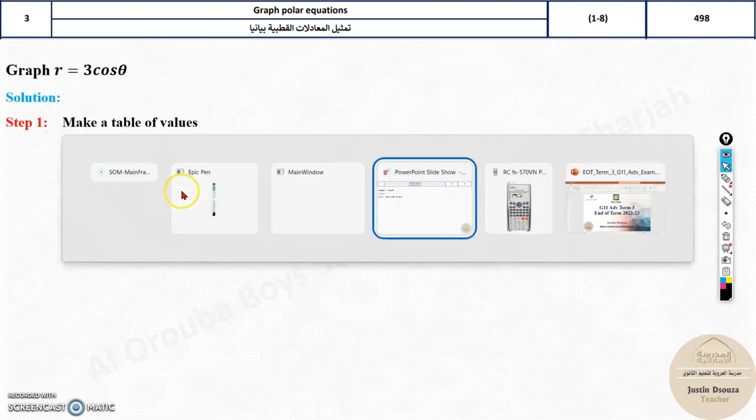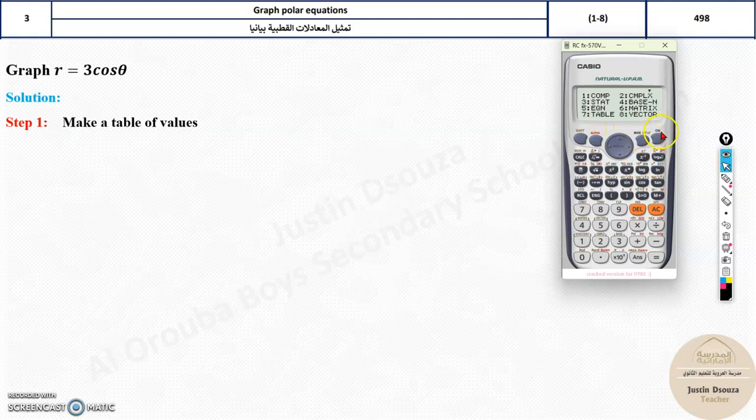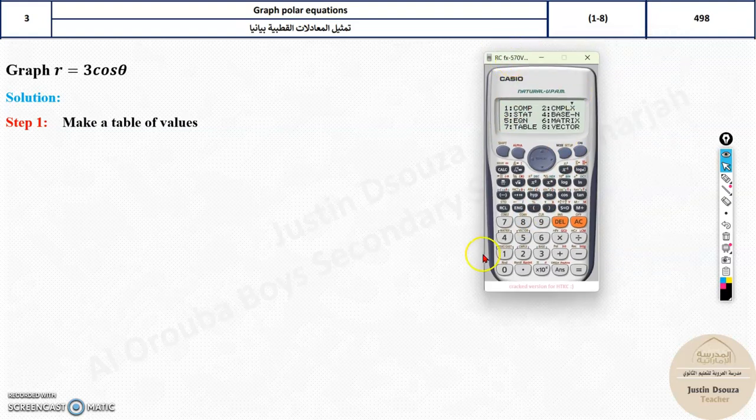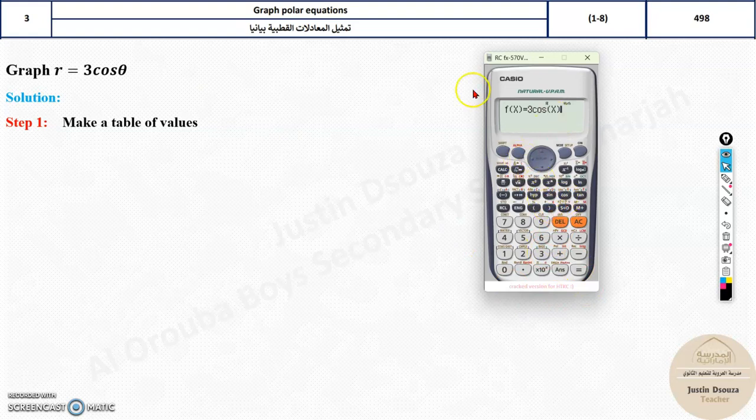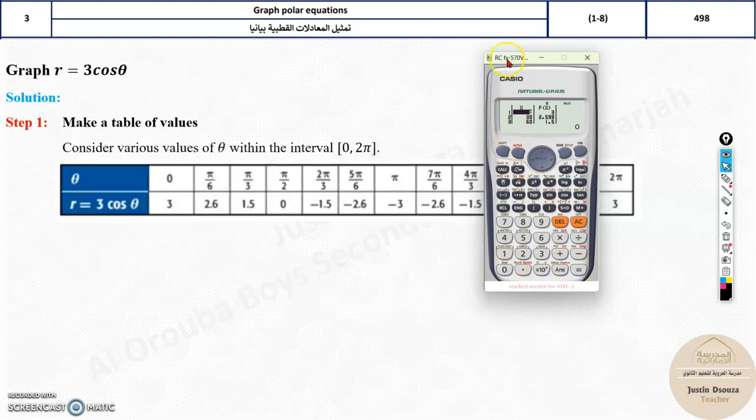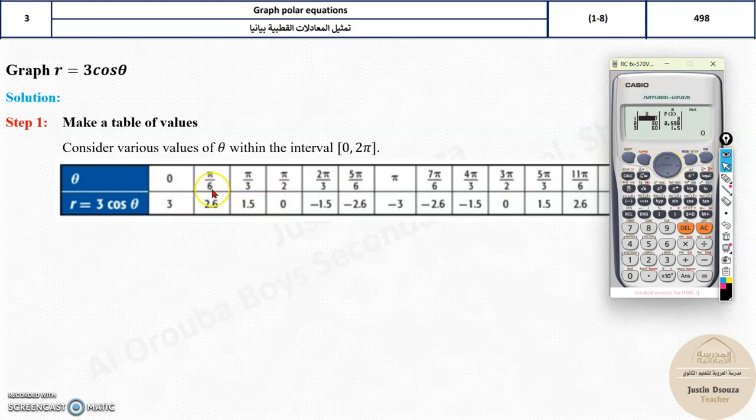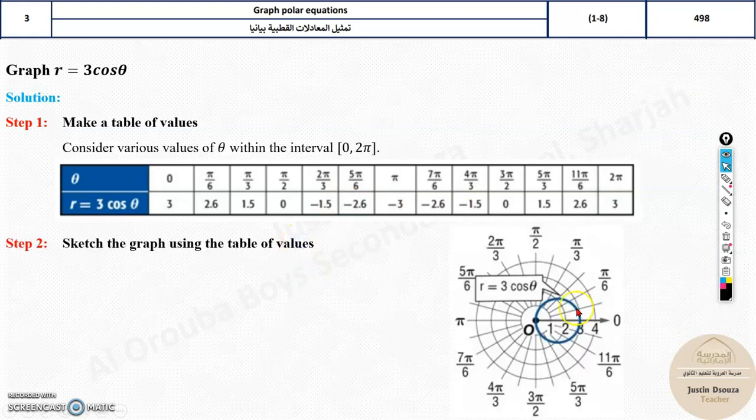We need to make the table of values. Let's use our calculator. Now mode. If you press on, it will go back to the same mode. That is mode table. Mode and 7. And now let's type 3cos x, because theta is unknown. And now you press equal to. Don't type anything over here. Let's start with 0 and end at 360. And then let's give this step of 30. And these are the values. Let's double check it. Over here you can see they are the exact same values. 0, 30 is 2.6, 1.5. Again will be 0 and so on. All the values are over here.